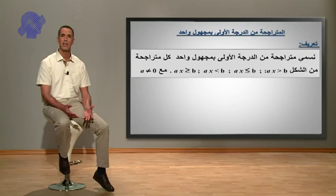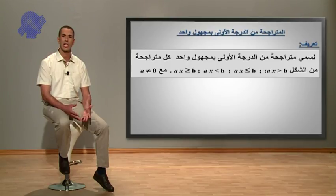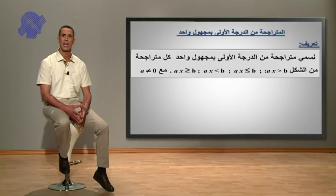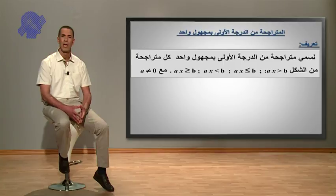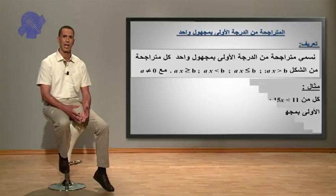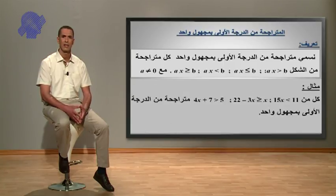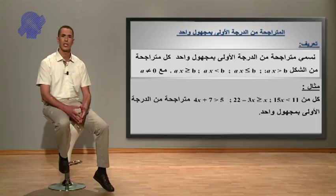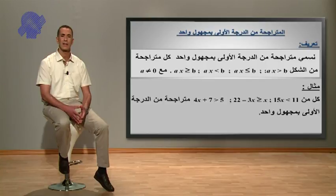تعريف: نسمي متراجحة من الدرجة الأولى بمجهول واحد كل متراجحة من الشكل: AX أكبر تماما من B، أو AX أصغر أو يساوي B، أو AX أصغر تماما من B، أو AX أكبر أو يساوي B، مع A عدد غير معدوم. مثال: كل من 15X أصغر تماما من 11، و22 ناقص 3X أكبر أو يساوي من X، و4X زائد 7 أكبر تماما من 5 هي متراجحة من الدرجة الأولى بمجهول واحد.